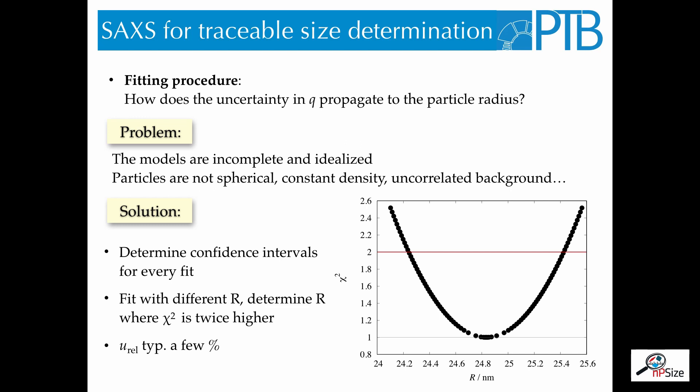Now, we have a traceable q-axis, but how does this relate to the particle radius? The two, the q and the particle radius, are related by the model which we fit to the scattering curve. The problem is that these models are usually incomplete and idealized.